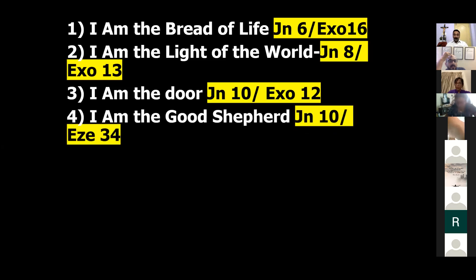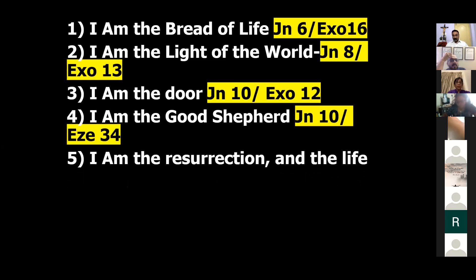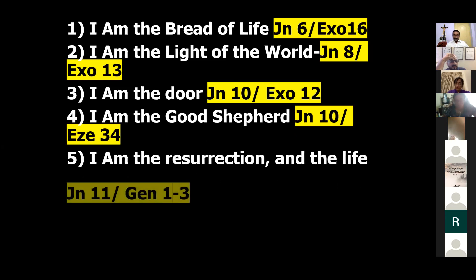Number four: 'I am the good shepherd' — John chapter 10, prefigured in Ezekiel 34. Number five: 'I am the resurrection and the life' — John 11. Bible scholars and theologians have not found an exact Old Testament connection, but generally believe it refers to the entire creation in Genesis chapters 1 to 3.